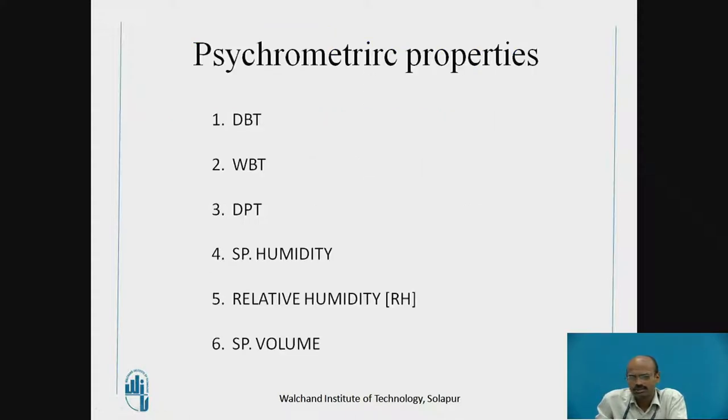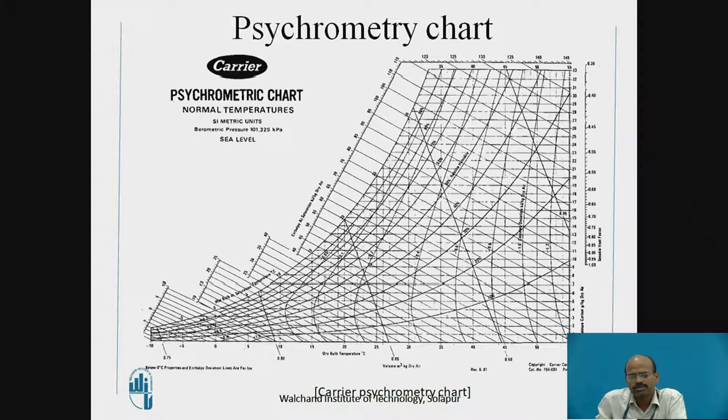In the first session, we have studied psychrometric properties such as dry bulb temperature, wet bulb temperature, dew point temperature, specific humidity, relative humidity, and specific volume. Now these properties we can either locate or obtain from the psychrometric chart.